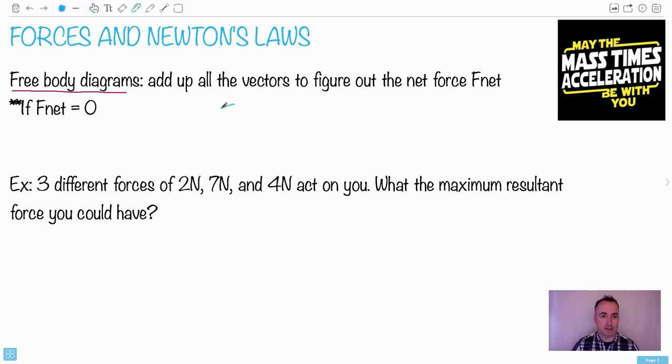F with little subscript net means that's the result of adding all the different vectors up. So let's just say there's a force acting on me this way and there's a force acting on me also this way. If the two forces are equal and opposite, let's say they're both two newtons, the end result is going to be zero in this case. Therefore, the F net equals zero. And if F net equals zero, there's no acceleration. This is the key thing here.